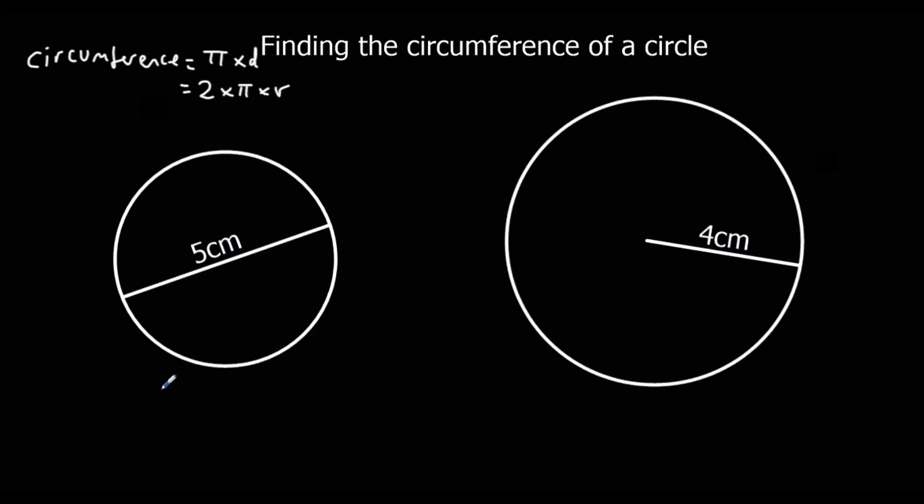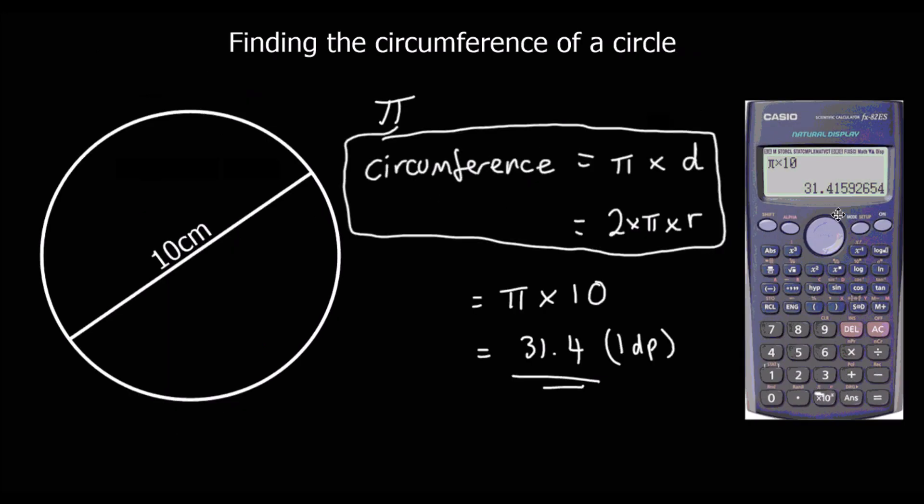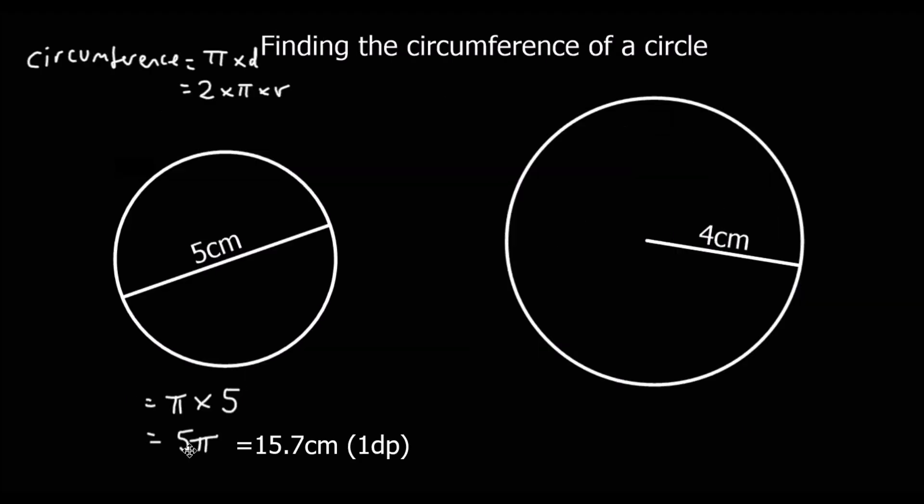So we've got the circumference is equal to pi times diameter, which is 5. So I'm just going to write 5 pi for now. It will come up on the calculator as 5 pi, and you have to press this SD button to convert it to a decimal. So I'm going to leave it as 5 pi here. But if you type that in the calculator and press that SD button, it will give you it as a decimal.